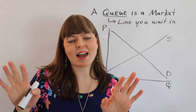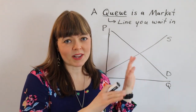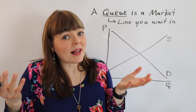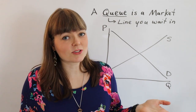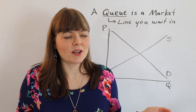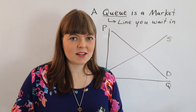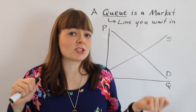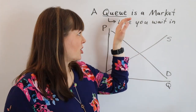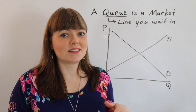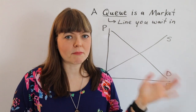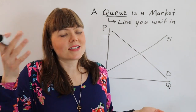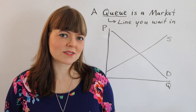The basic idea here is that regular supply and demand curves involve you allocating a scarce resource, which is your money budget, to things according to how much you value them. A queue is the same thing, except instead of money being the scarce resource, time is the scarce resource.